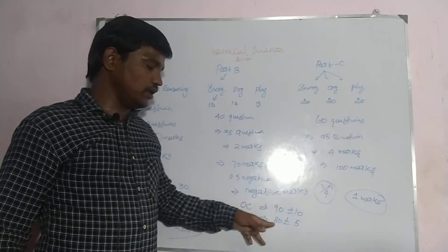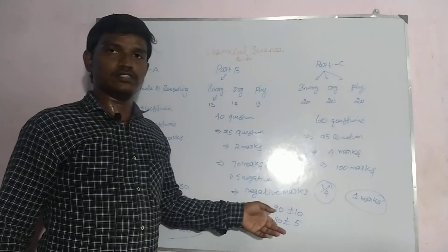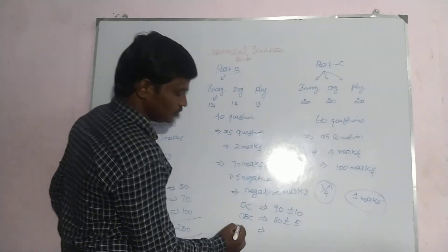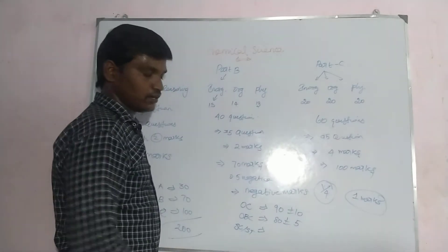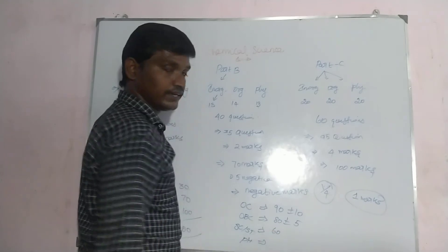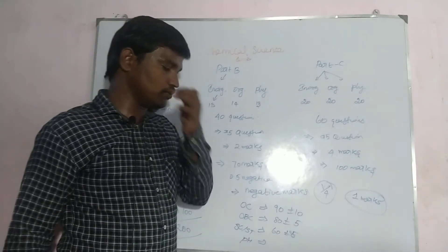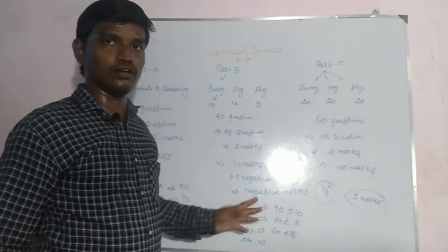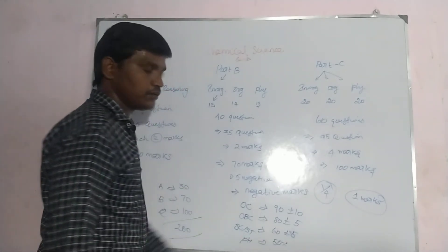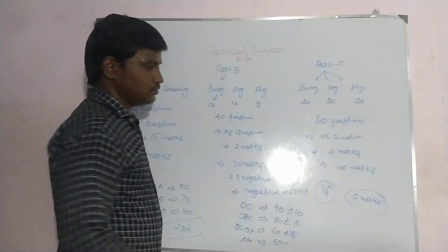For OBC candidates, the cutoff is around 80 marks, plus or minus 5 to 10, for assistant professor or lectureship. If questions are tough, cutoff will be less, and you may also qualify for JRF. For SC/ST candidates, sometimes 60 marks, plus or minus 5 to 10 — sometimes even 55 marks qualifies for lectureship, and 60 for JRF. For physically handicapped candidates, 50 marks out of 200 will definitely qualify for CSIR-UGC examinations.